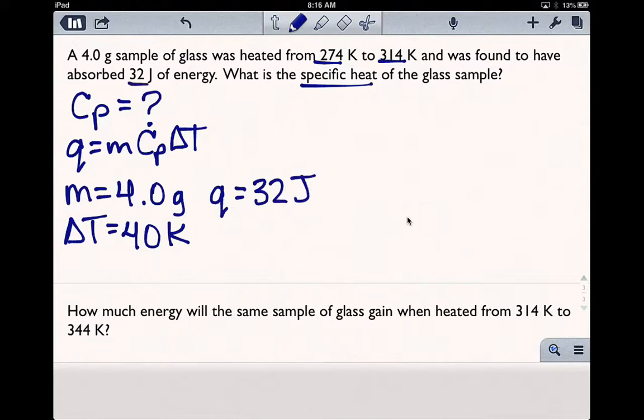So now that we know all of this information, we can plug everything into our formula. Let's go ahead and rearrange our formula slightly to solve for C sub P. So then we end up with Q over mass delta T.